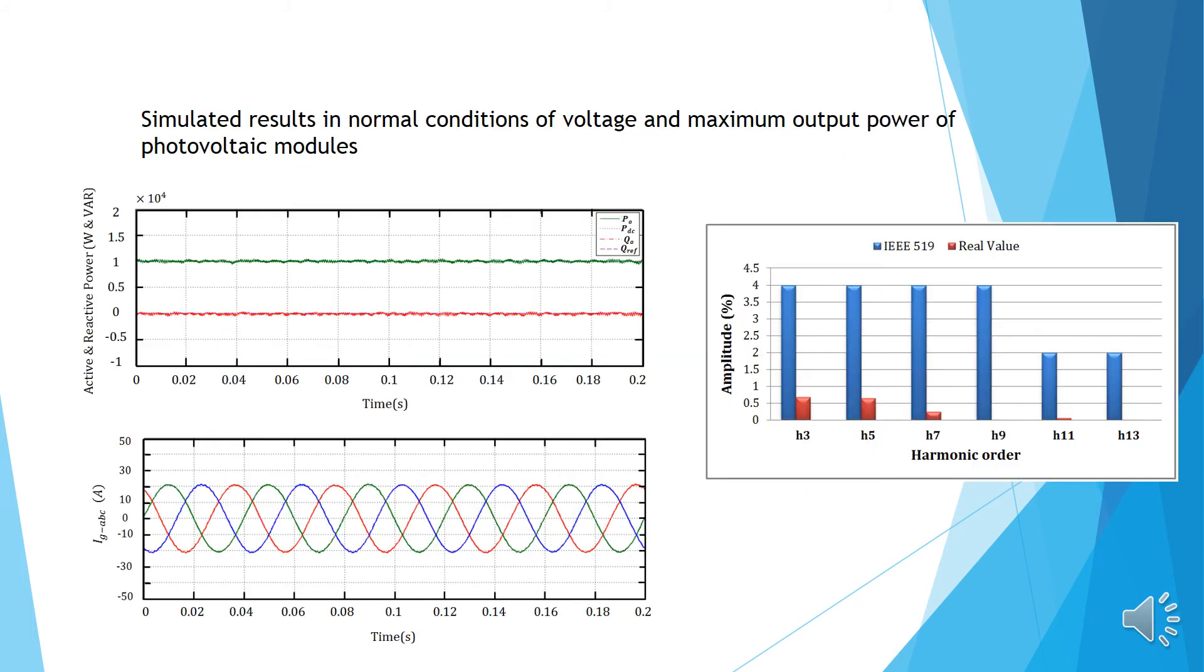The results obtained for stable operation conditions are illustrated in these figures. While the voltage is in normal condition, a maximum output power of the photovoltaic module is available. In this case, the THD is less than 1.5%.